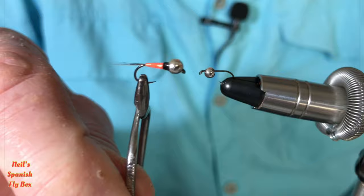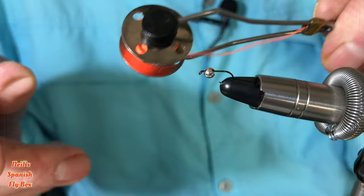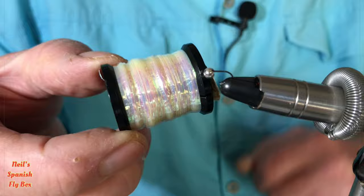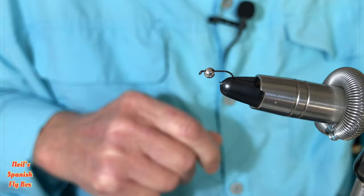Today we're going to tie it with fluorescent orange floss and cover it with translucent pearl mylar. It's a fairly simple tie, and we'll get straight into it.